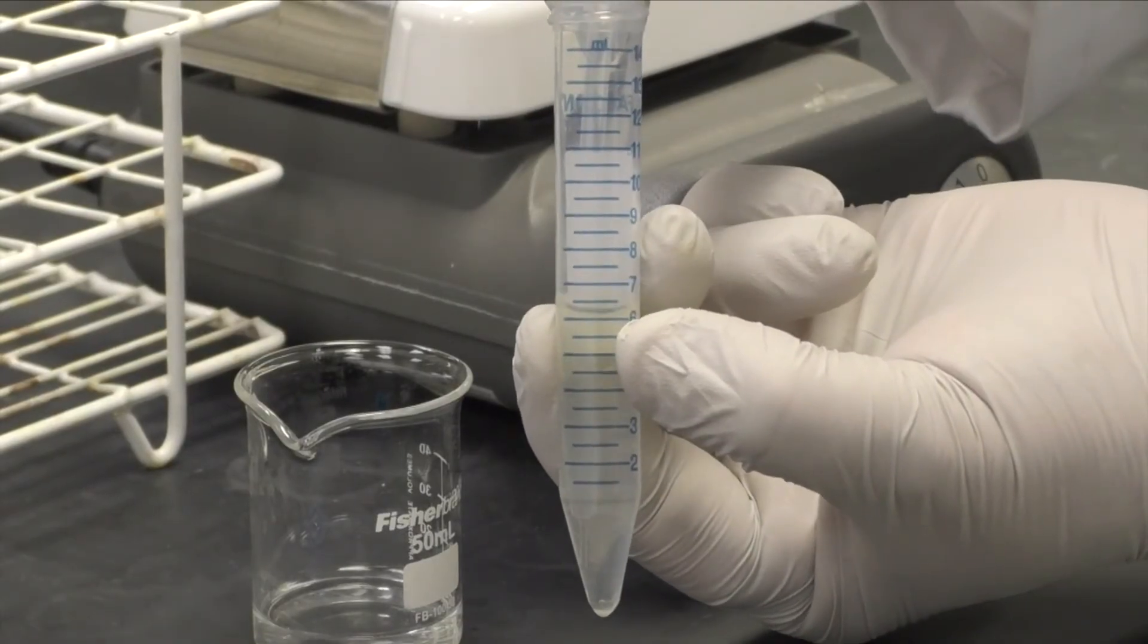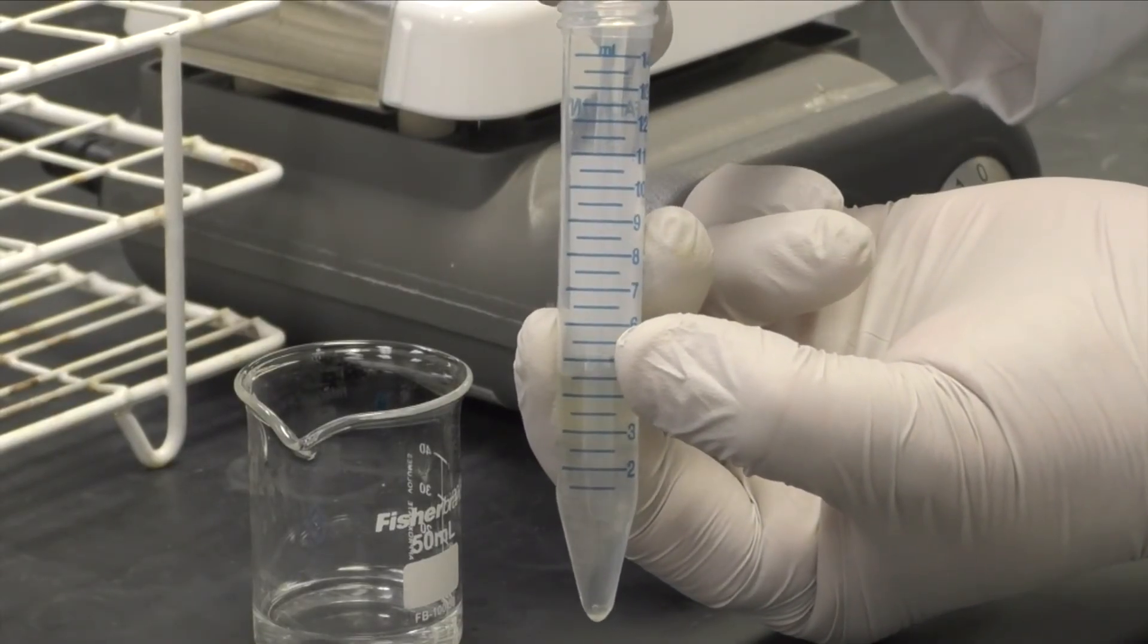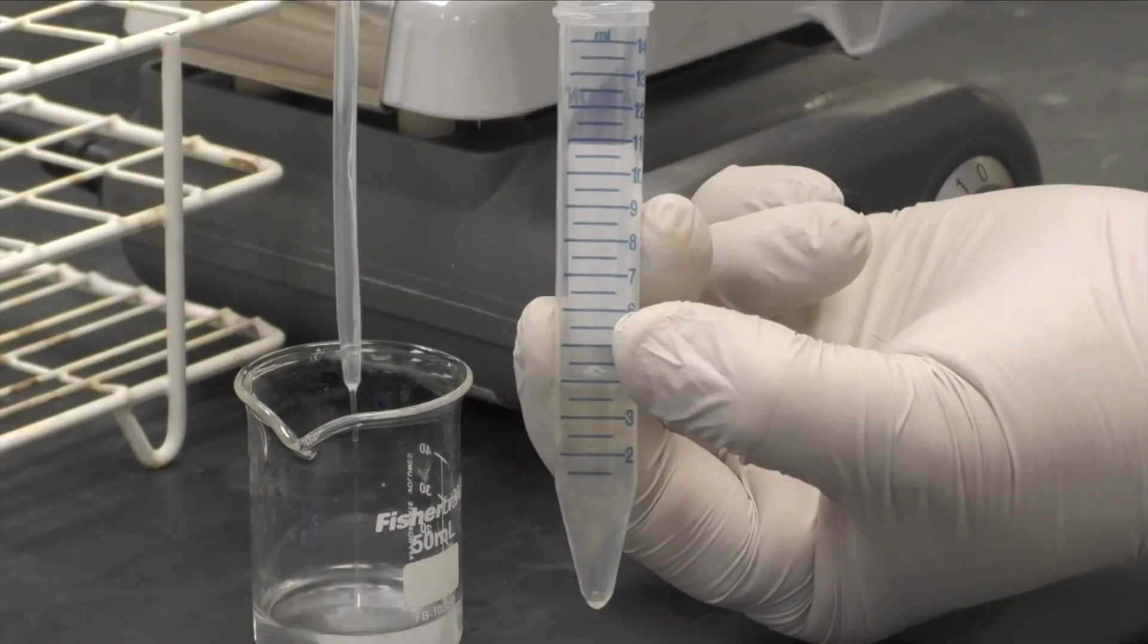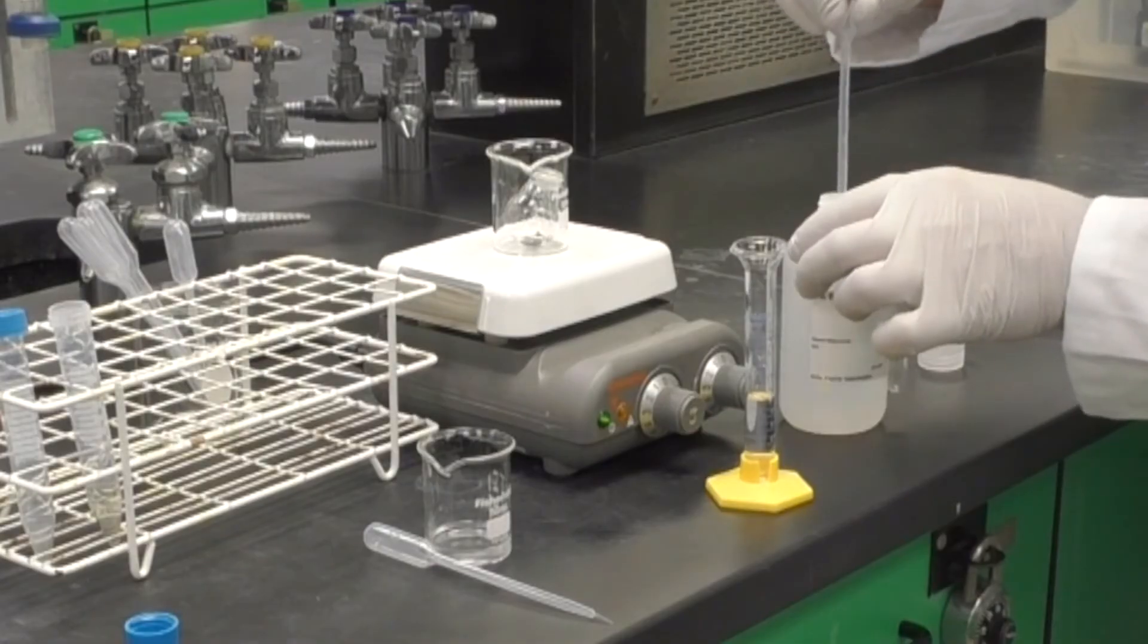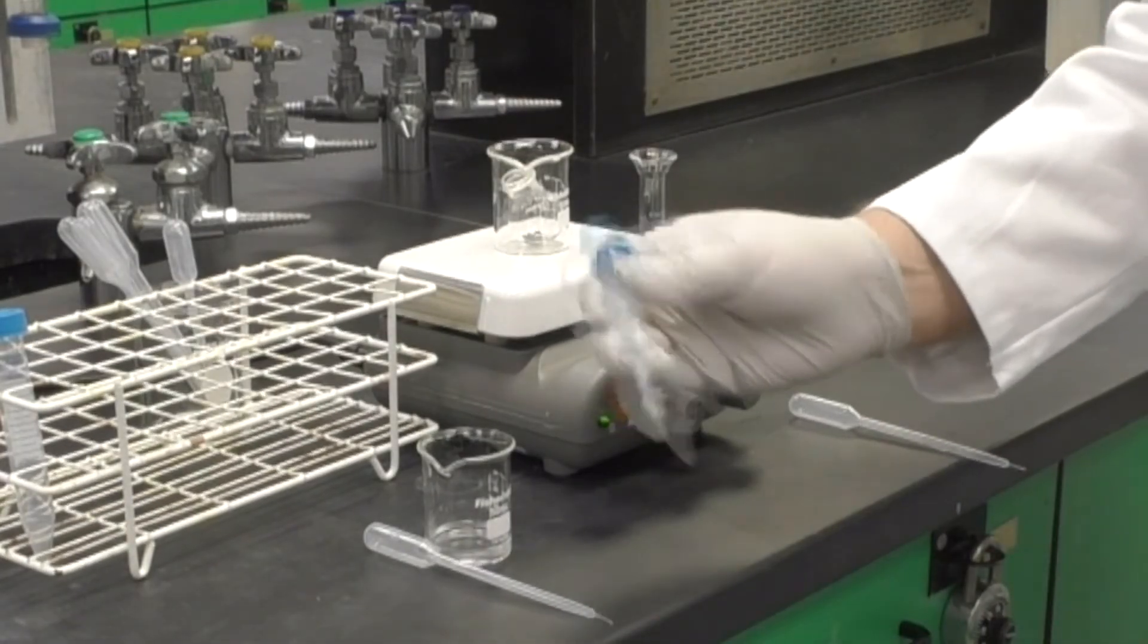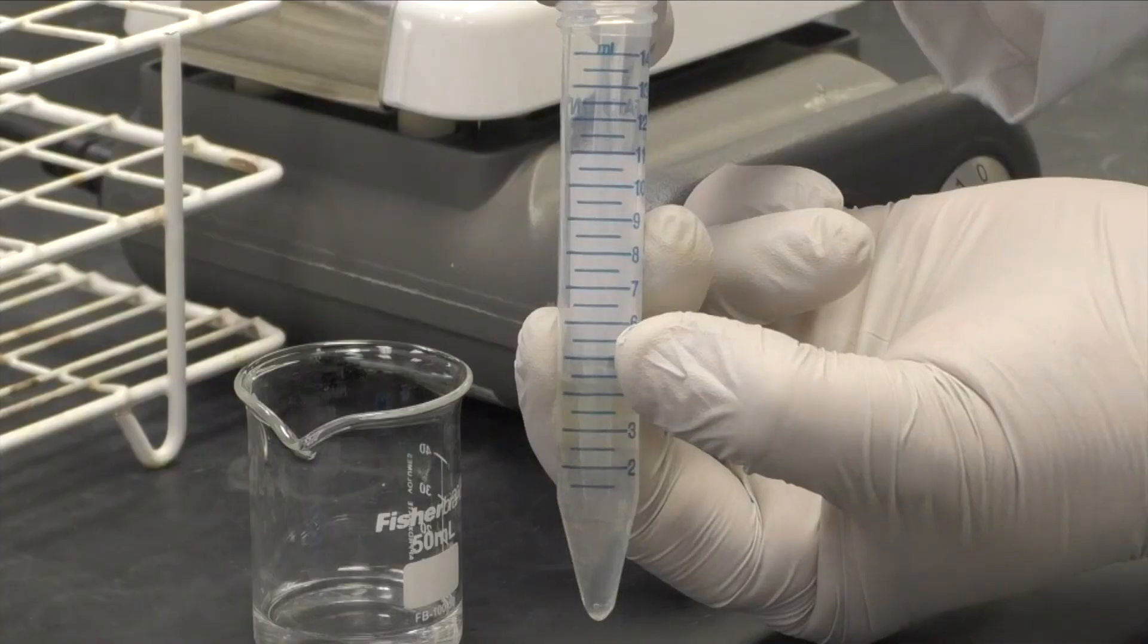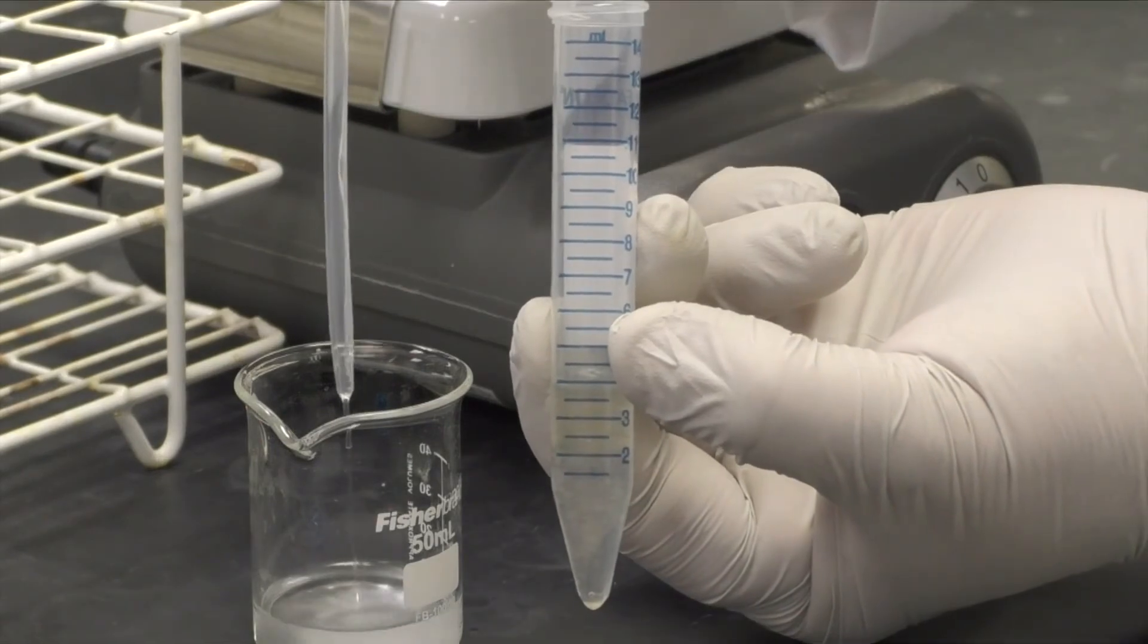Using a transfer pipette, remove the bottom layer and place it in a 50 ml beaker. Add another 5 milliliters of the 5% sodium bicarbonate to your 10 ml round bottom flask and repeat the entire process again.